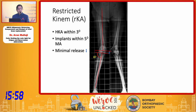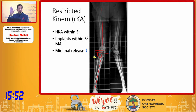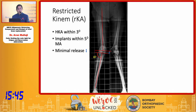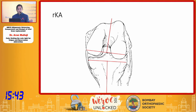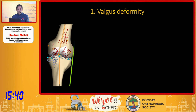With restricted kinematic alignment, you want to bring the HKA within 3 degrees — you don't want a great degree of residual valgus. So you will end up doing a little bit of release, both in flexion as well as in extension.